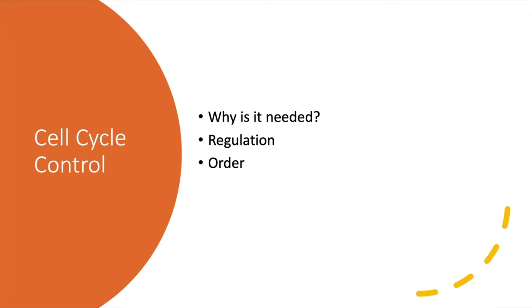In addition to regulation, we also need order. Without regulation, we end up accumulating too many cells, and that leads to disorder. When we have disorder, chaos forms. Without order, specific events don't take place in the correct sequence.